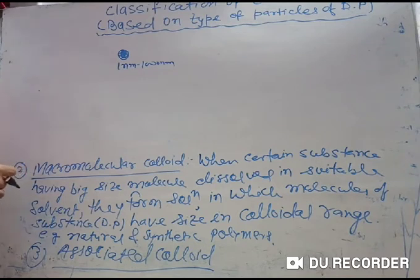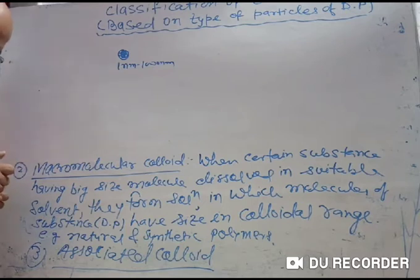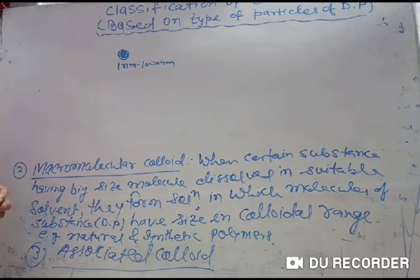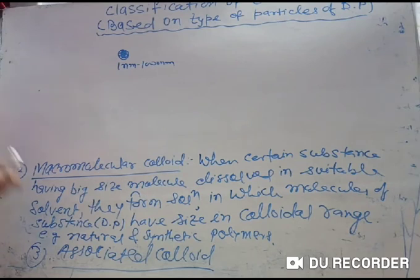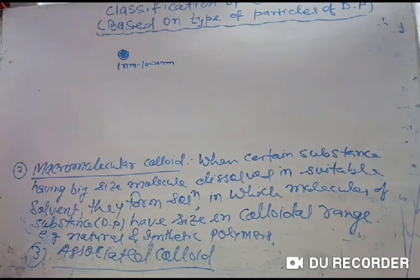Macromolecular colloids involve macromolecules — means polymers — having big molecules. On dispersion of the dispersed phase in dispersion medium, the particles of the dispersed phase already have colloidal dimensions. We can say that when certain substances, especially those having big-sized molecules, are dissolved in a suitable solvent or dispersion medium, they form a solution in which the molecules of the dispersed phase have size in the colloidal range.